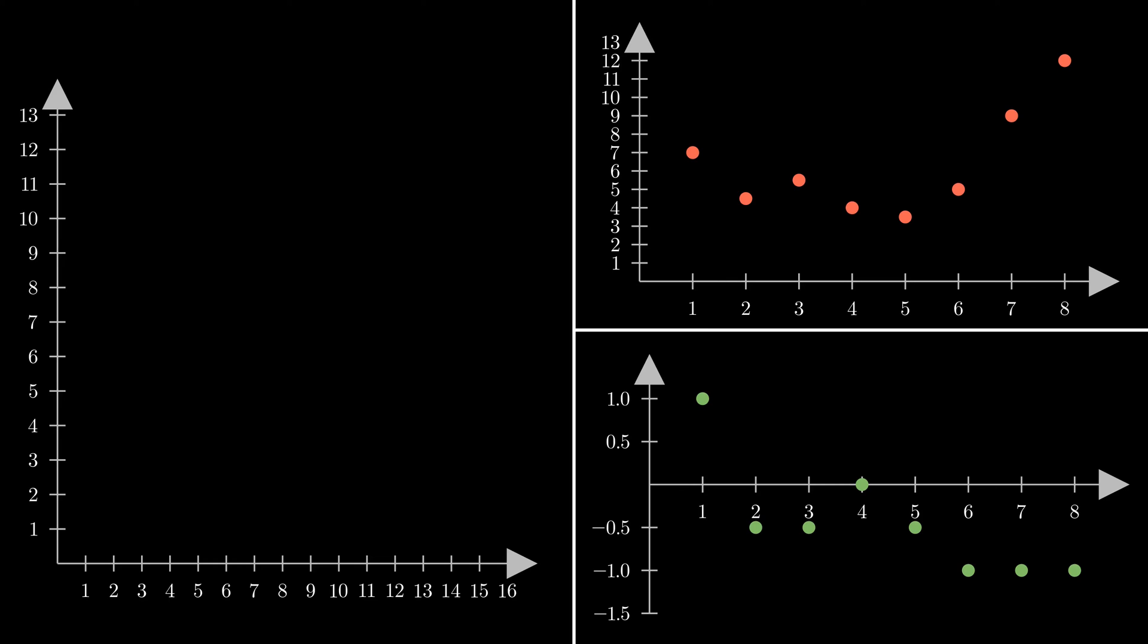After computing this difference for each pair, we now have a total of 16 points, as we had at the beginning, spread into two different signals. The first one, in red, represents an approximation of the original signal, while the other one, in green, represents what the first one misses to match the original signal. We talk about approximation space and detail space.